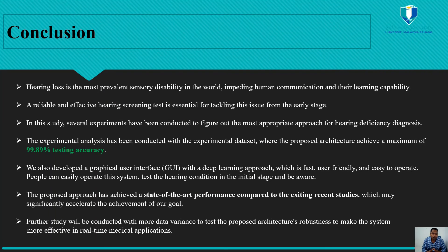Hearing loss is the most prevalent sensory disability in the world, impeding human communication and learning capabilities. A reliable and effective hearing test is essential for addressing this issue from an early stage. In this study, several experiments were conducted to determine the most appropriate approach for hearing deficiency diagnosis. The experimental analysis was conducted with the experimental dataset, where the proposed architecture achieved a maximum of 99.89% testing accuracy. We also developed a graphical user interface with the improved VGG-16 model, which is user-friendly and easy to operate.